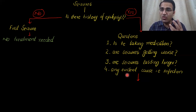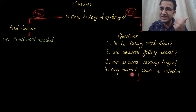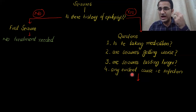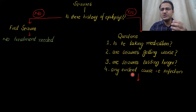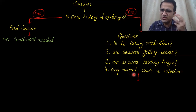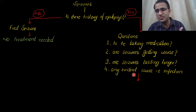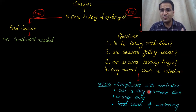Look for any evident cause for seizures: is the patient having any infection, emotional stress, or a genetic family history of epilepsy? These are the key questions to understand why a patient with known epilepsy has come to you and what options are available.